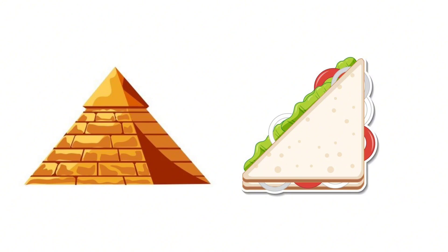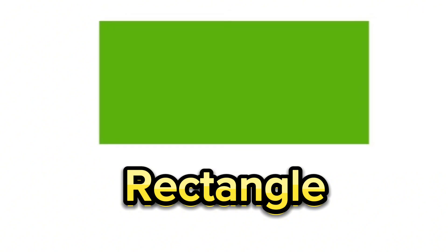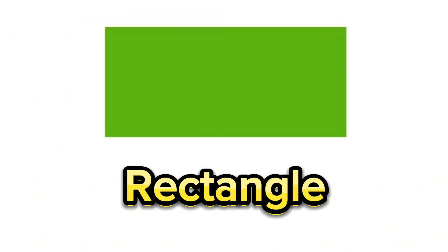Next shape is rectangle. Rectangle is a flat enclosed shape. A rectangle has four sides and four angles. Examples of rectangle objects are door and blackboard. Do you have a blackboard in your school? In your classroom? Yes? Good.